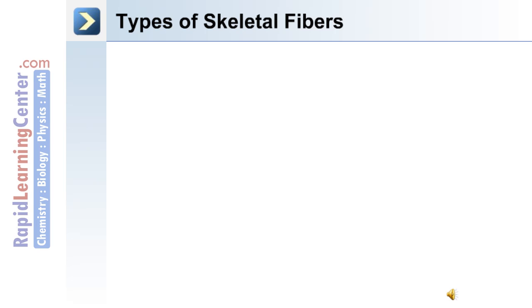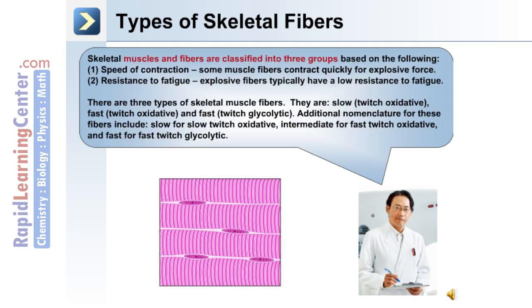There are different types of skeletal fibers in our body, and an individual muscle can have more than one fiber type. Skeletal muscles and fibers are classified into three groups based on diameter, color, speed of contraction, and resistance to fatigue. Explosive fibers typically have a low resistance to fatigue. The three types include slow twitch oxidative, fast twitch oxidative (intermediate), and fast twitch glycolytic (fast).